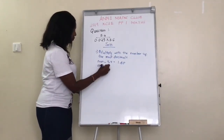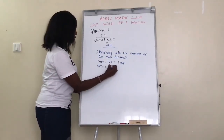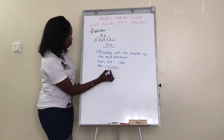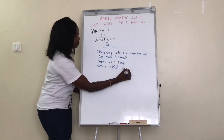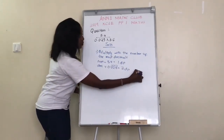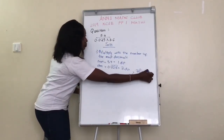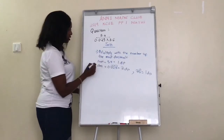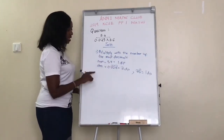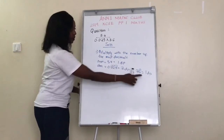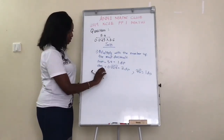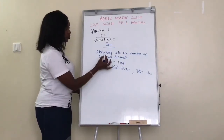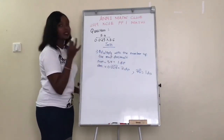In the denominator we have 0.025, which has 3 decimal places, and we also have 3.6, which has 1 decimal place. So in the numerator we only have 1 decimal place, but in the denominator we are going to have 3 plus 1, that is 4 decimal places. So what you need to do now, as I said, is multiply with the number of the most decimal places.